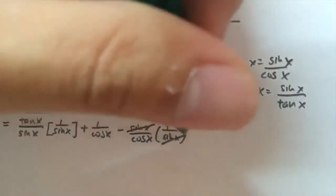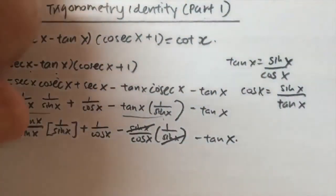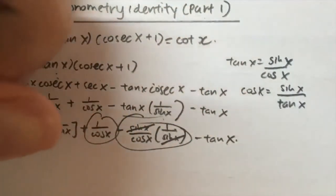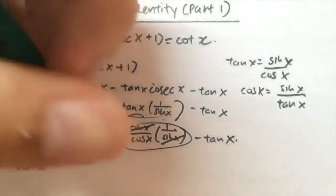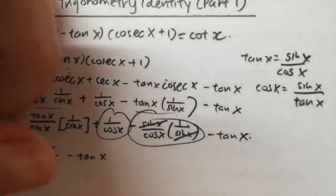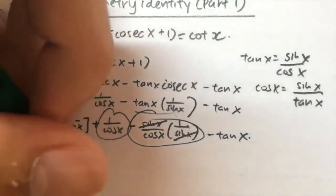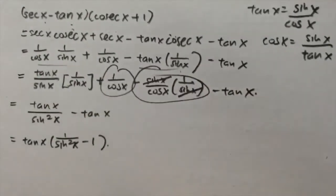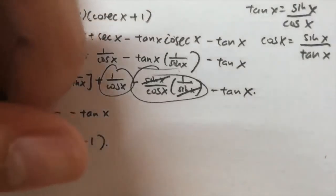I will cancel this out, and this will become minus tan x. So I simplified this term and subtracted with this term — it becomes 0. So I now have something remaining. Next I will factorize tan x out, which gives tan x times (1/sin²x minus 1).